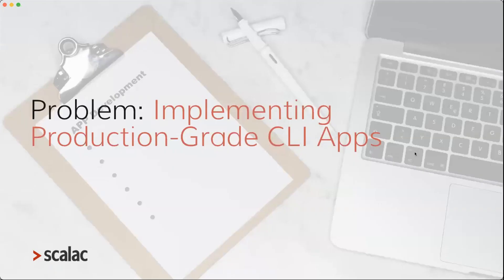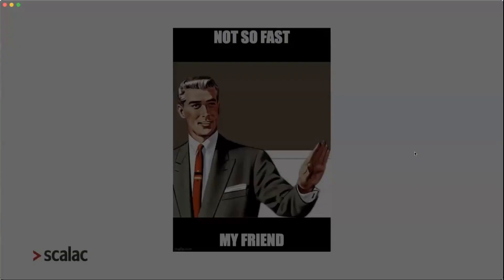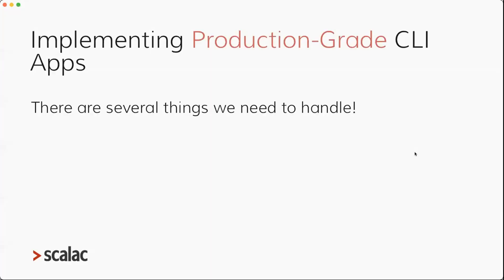Now the problem is how we can implement production-grade CLI apps — apps that are very powerful, with nice documentation, such as the AWS CLI or the Git CLI. And maybe some of us may think that's a piece of cake, but not so fast, because there are several things we need to handle.